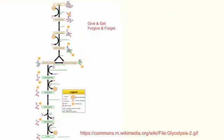You can see in those charging steps that first you have glucose, then glucose 6-phosphate, then fructose 6-phosphate, then fructose 1,6-bisphosphate. And so what I want to do really quick is you can really easily remember this just by saying give and get, forgive and forget. That's how you remember all the charging steps.